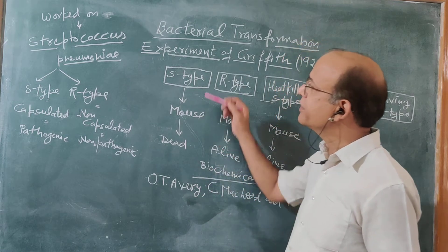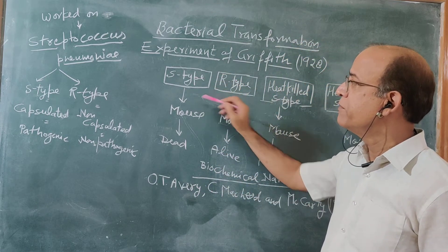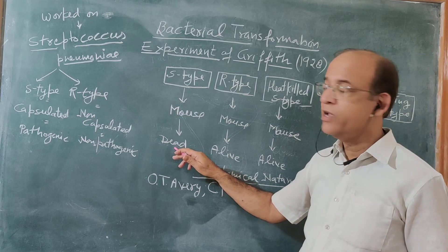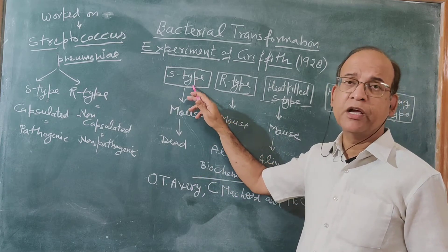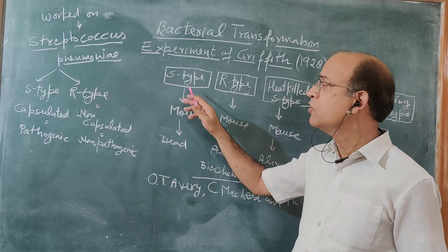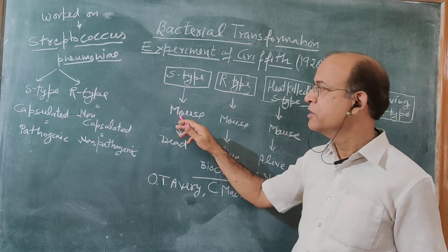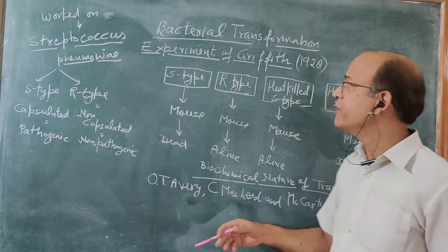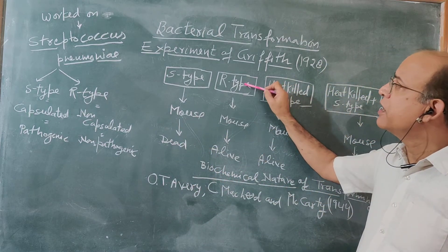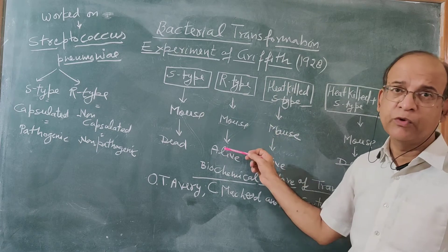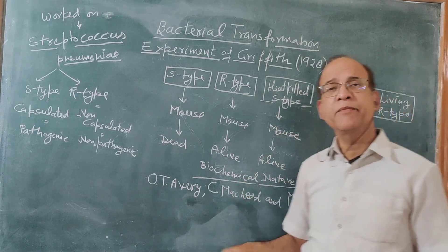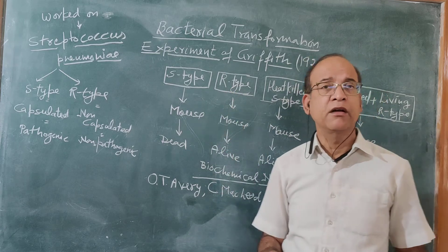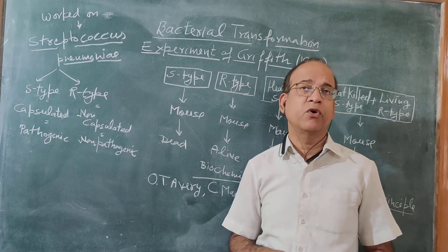When Griffith injected S-type bacteria in a mouse, the mouse died, because S-type bacteria is pathogenic and it causes pneumonia in the mouse. In another experiment, Griffith injected R-type bacteria in another mouse, but the mouse remained alive, meaning R-type bacteria were not able to cause disease.